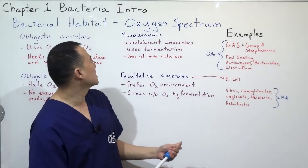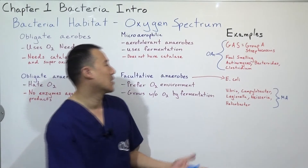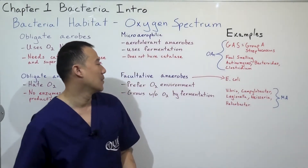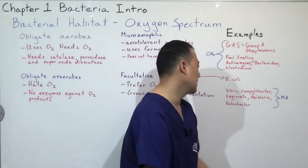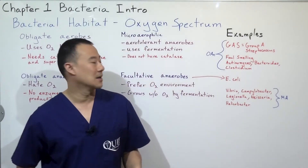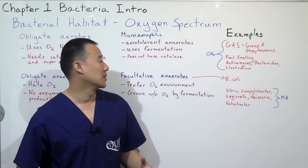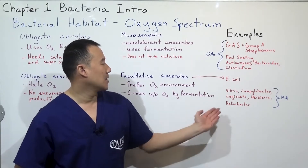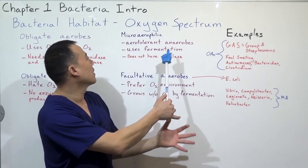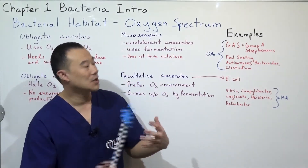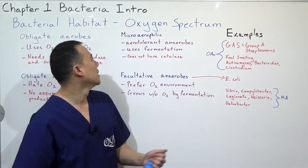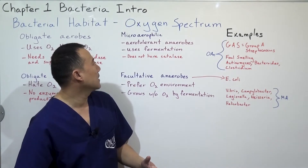Finally, microaerophilic bacteria include Vibrio, Campylobacter, Legionella, Neisseria, and Helicobacter. Helicobacter pylori is found in the stomach, and it causes a lot of problems. In the stomach there is still some oxygen, so it is microaerophilic — it is aerotolerant but predominantly uses fermentation.